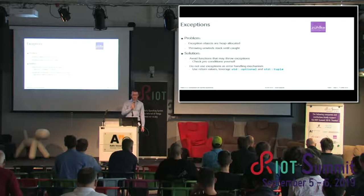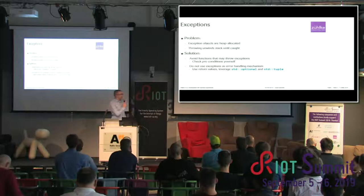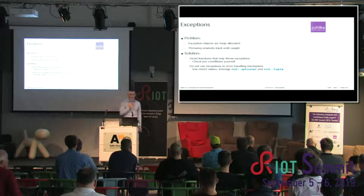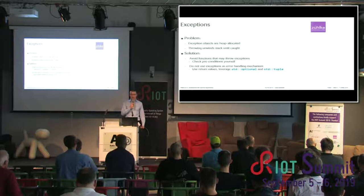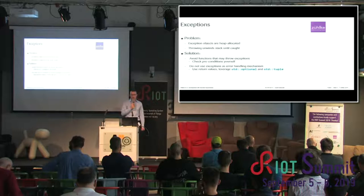The solution is: first, avoid functions that may throw exceptions. There are functions that throw, but you can omit this by checking preconditions yourself, since functions typically throw when preconditions are not met. Another option is to not use exceptions as an error-handling mechanism, but instead use return values like in classic C. You can leverage std::optional, which may or may not contain a value, to indicate an error state. Or you could use a tuple containing both the return value and error information, allowing you to return multiple values with a single return.